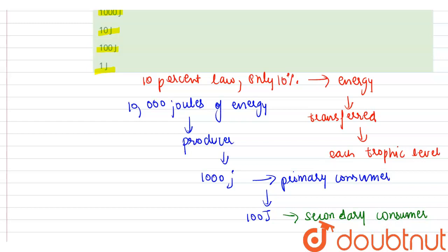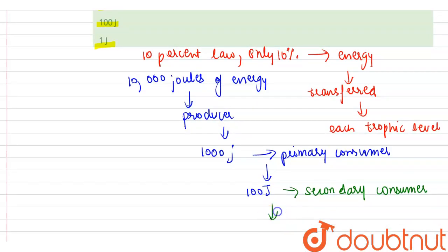And the energy available with the tertiary consumers will be 10 joules of energy.